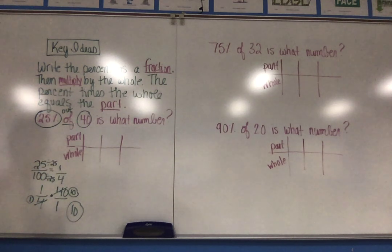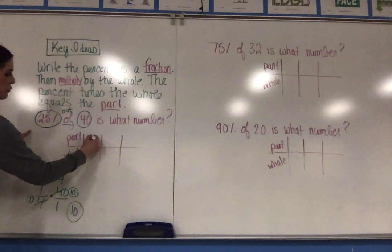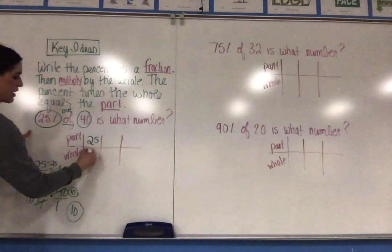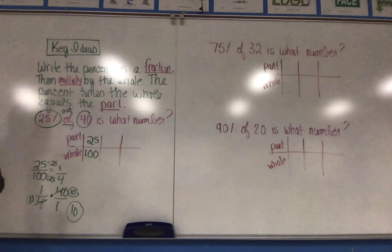So what I'm going to do with this first problem is I'm still going to take my percent, which was 25, which is the part, and I write it as a fraction over 100. I'm just putting it in a table, like a ratio table earlier in the chapter.